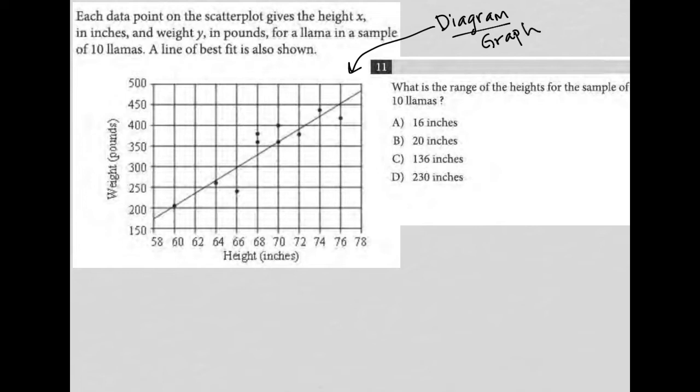Whenever I have a diagram, I like to check it out first before reading anything just to see if I can get a sense of what's going on. Looks like we have an x-axis that is height, a y-axis that is weight, and we have some points along here with what looks like a line of best fit. The line doesn't go through the points, it just kind of gives you the general trend of where the points are headed.